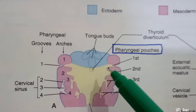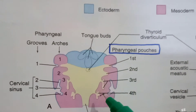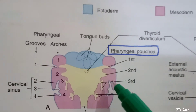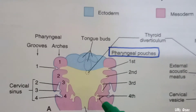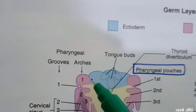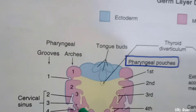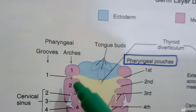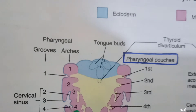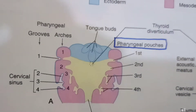To recap: the internal layer is the pharyngeal pouches; the inside structure is the pharyngeal arches; and the external layer consists of the pharyngeal grooves or clefts.